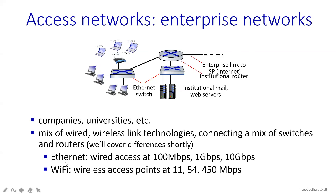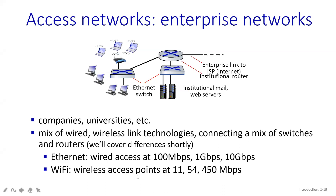It will also have specific transmission rate values. The Ethernet transmission rate with wired connections will be 100 Mbps, 1 Gbps, or 10 Gbps — it depends. On your Wi-Fi, it can give 11, 54, or 450 Mbps access points. It will provide all this variety of access points.